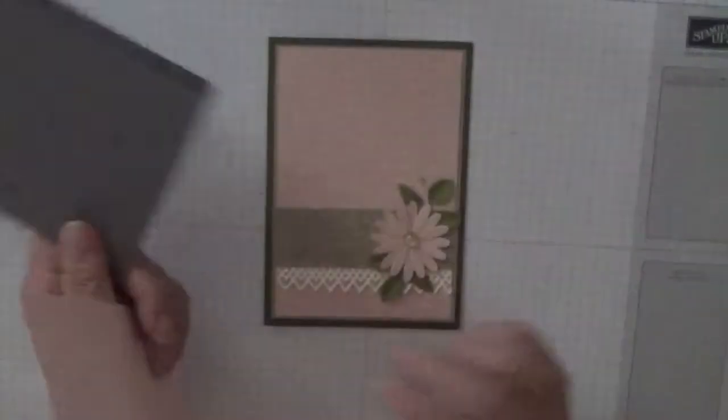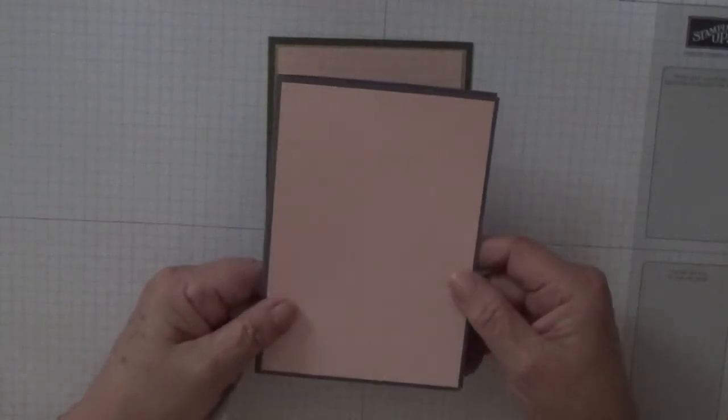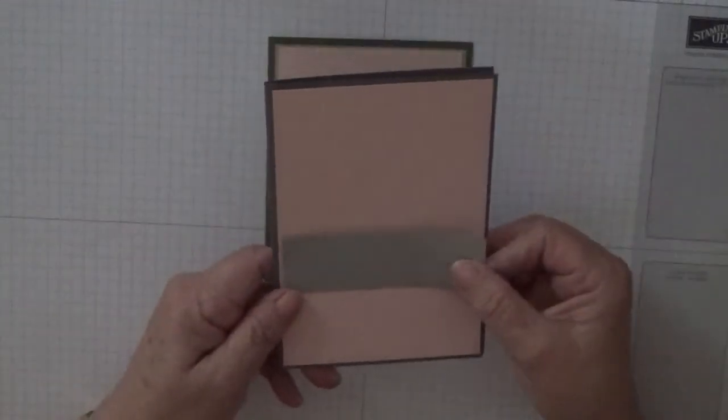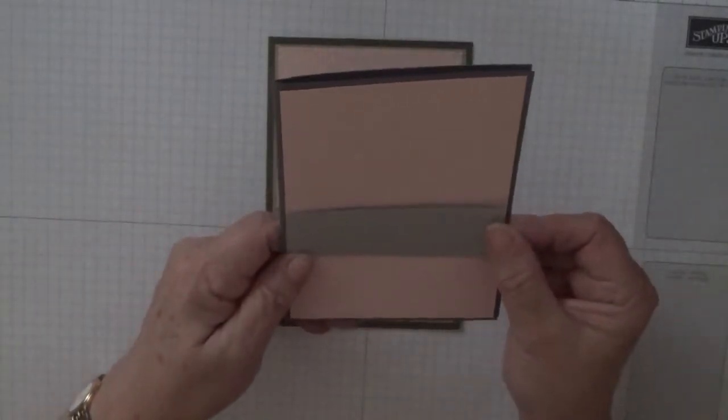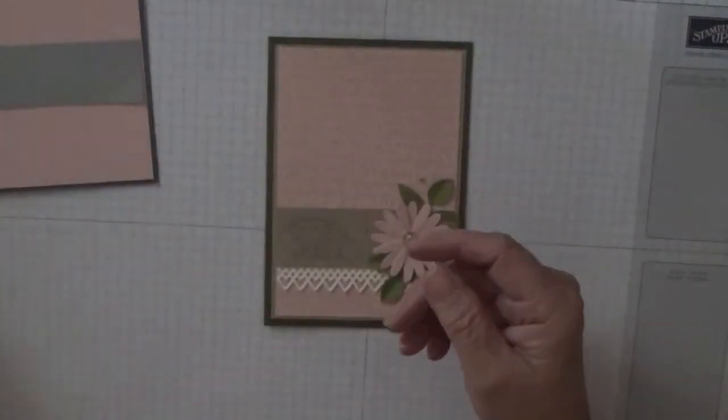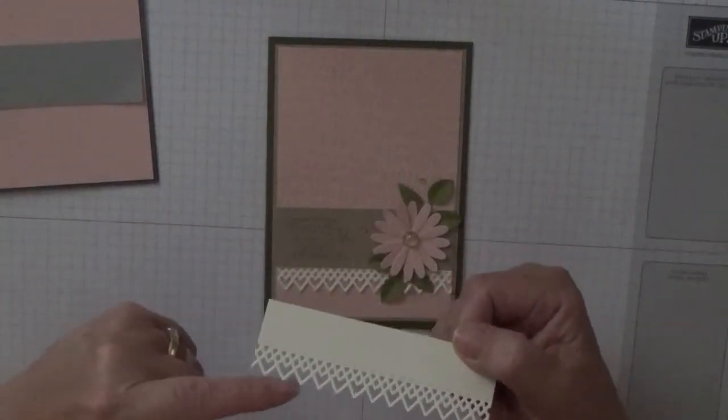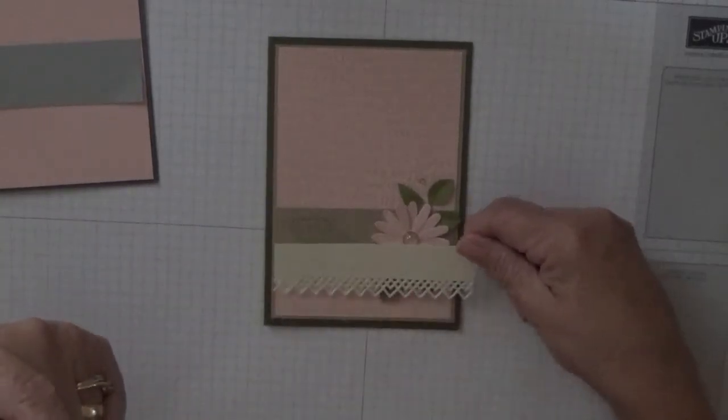We've got a piece of petal pink cardstock at five and five eighths by three and seven eighths, and I've got a piece of smoky slate at one and a quarter inches by three and seven eighths of an inch. I've also got a piece of very vanilla where I use the delicate eyelet die on there just for an extra bit of trim.